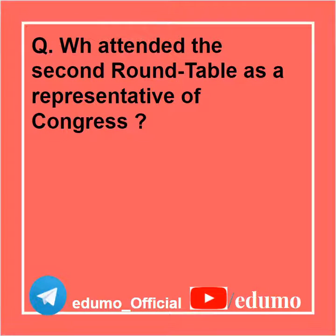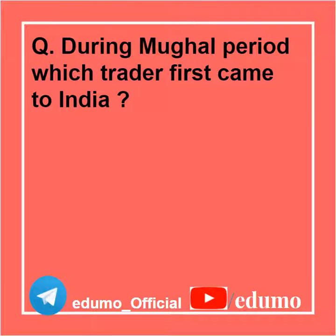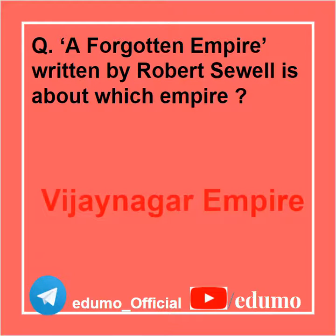Who attended the second round table conference as a representative of Congress? Gandhiji. The book 'A Forgotten Empire' written by Robert Sewell is about which empire? Vijayanagara Empire.